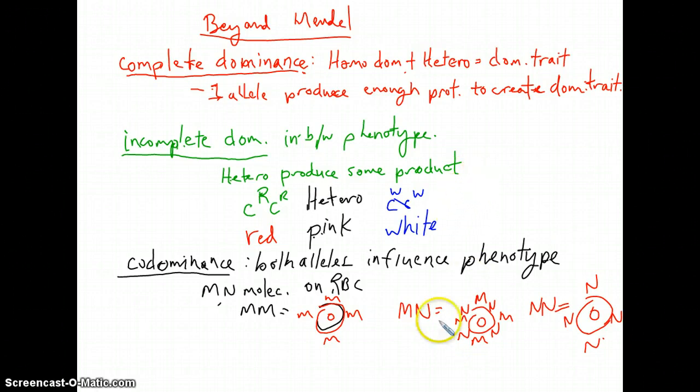Now, another category of non-Mendelian inheritance is the case of multiple alleles. Now, in the case of multiple alleles, you have many different possibilities for a particular character. So, many alleles are possible.